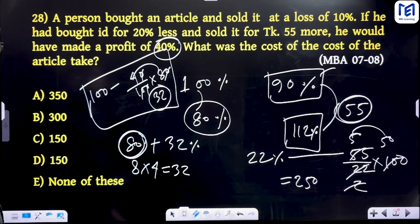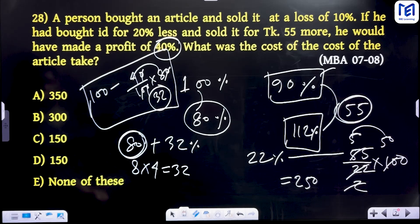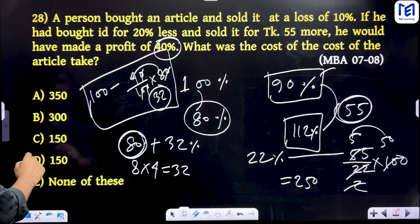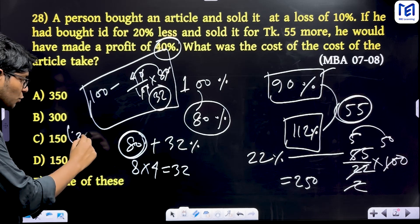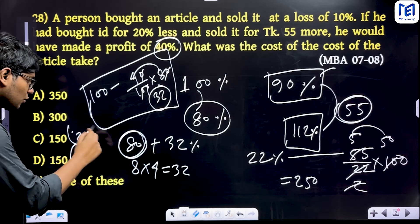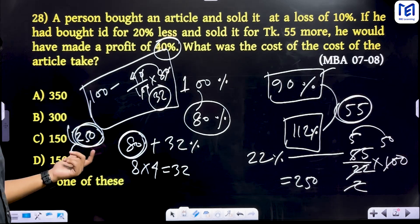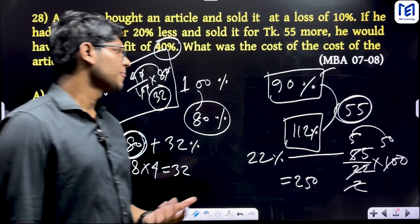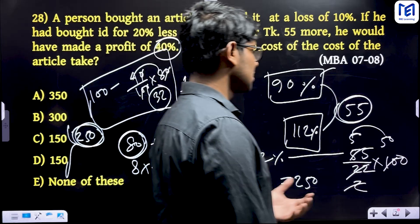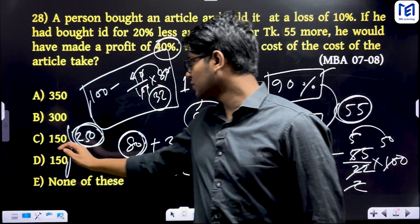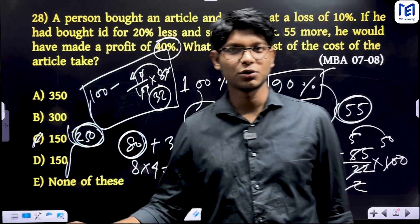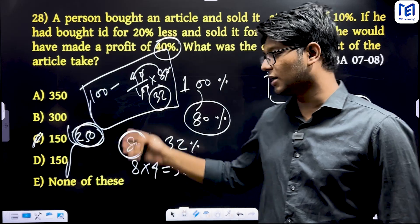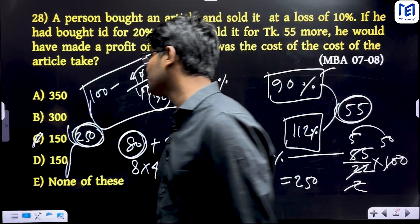The cost price is 255. In this case, the option is $25, and $25 is the answer. The answer is $25.